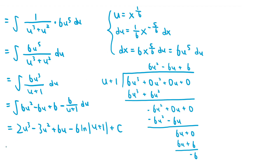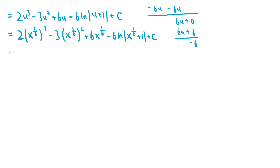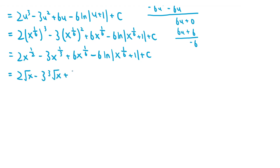Substituting x to the power of 1/6 back in for u, this becomes 2 times x to the power of 1/6 cubed, minus 3 times x to the power of 1/6 squared, plus 6 times x to the power of 1/6, minus 6 times ln of the absolute value of x to the power of 1/6 plus 1, plus c. This simplifies to 2x to the power of 1/2 minus 3x to the power of 1/3 plus 6x to the power of 1/6 minus 6 ln of the absolute value of x to the power of 1/6 plus 1 plus c, which we can write as 2 times the square root of x minus 3 times the cube root of x plus 6 times the 6th root of x minus 6 ln of the 6th root of x plus 1 plus c. We don't need the absolute value before the ln because the 6th root of x plus 1 is always positive.